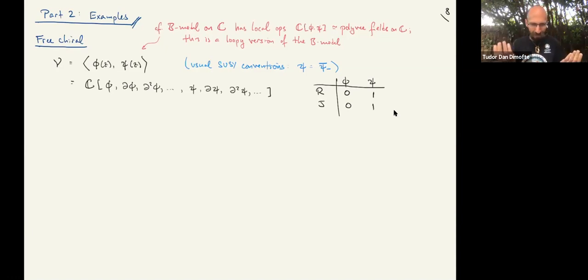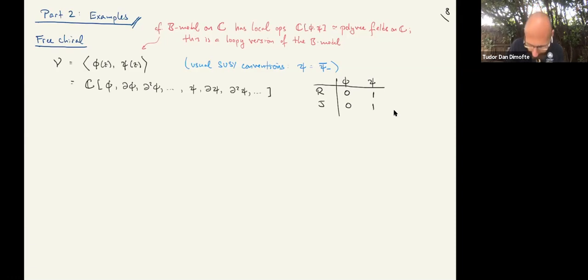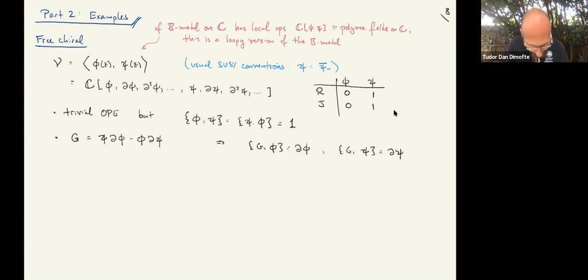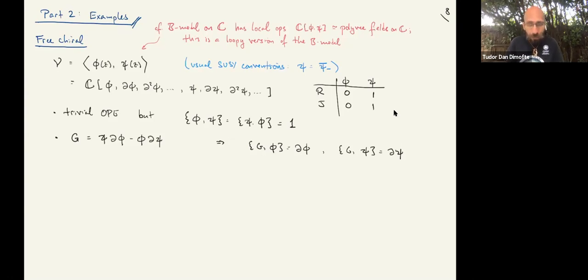For the free chiral in 3d, there are two bits of the superfield that contribute to the bulk algebra: the leading complex boson and one of the fermions. If we think about a U(1) symmetry rotating that chiral, the boson and the fermion have opposite charges — the fermion I'm talking about is one of the sidebars. So the bulk algebra is just modes of a boson and a fermion. The OPE is of course trivial, but the bracket is not. The bracket pairs the boson and the fermion, and if you write down the supercurrent, you find that the bracket with the supercurrent generates derivatives — holomorphic derivatives del_z.